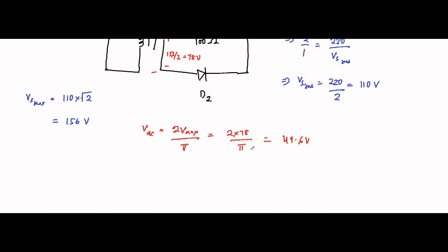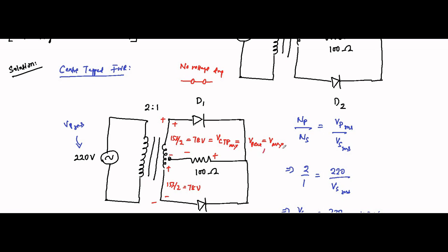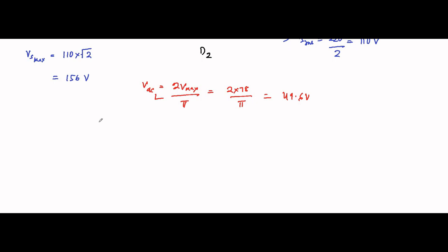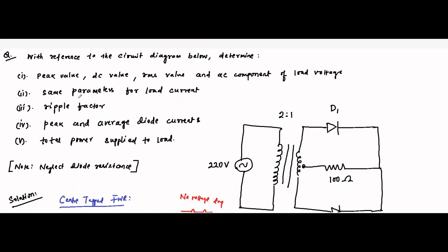Now we determine the RMS value of the load voltage. For a full wave rectifier, VRMS = Vmax / √2 = 78 / √2, which equals approximately 55V. So the peak load voltage is 78V, the DC value is 49.6V, and the RMS value is 55V. All voltage parameters for the load have been determined.